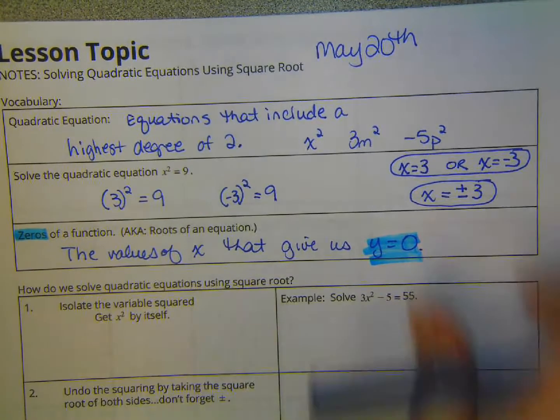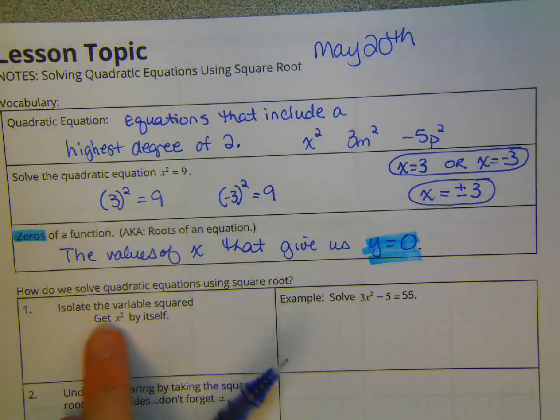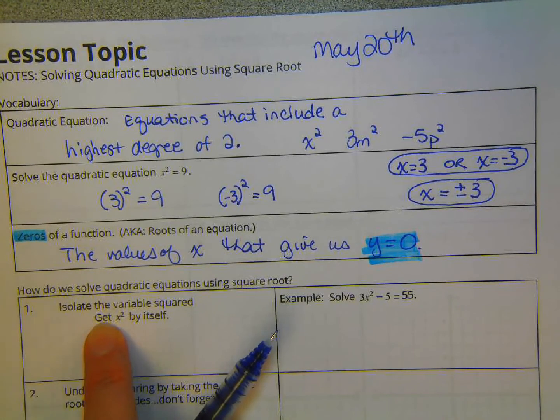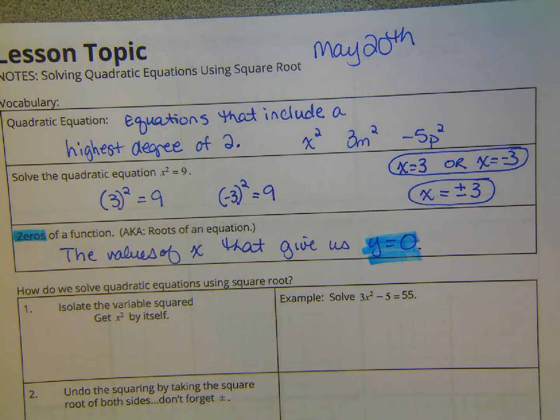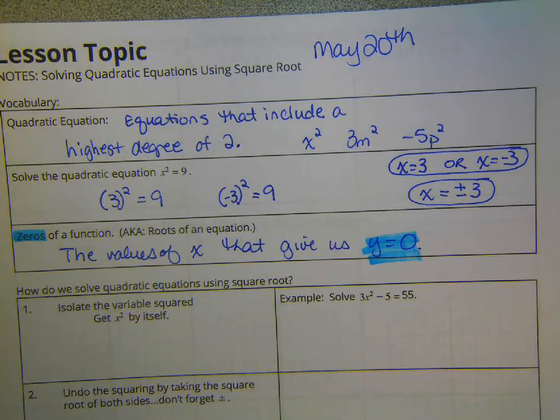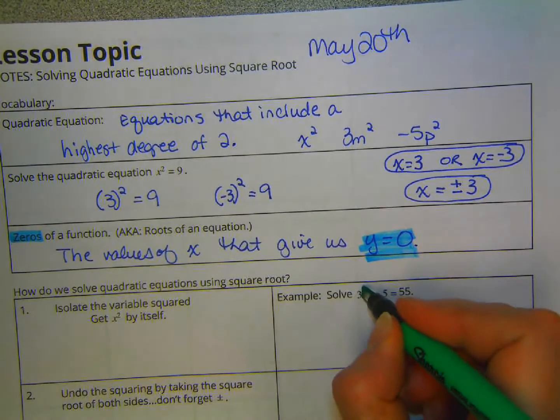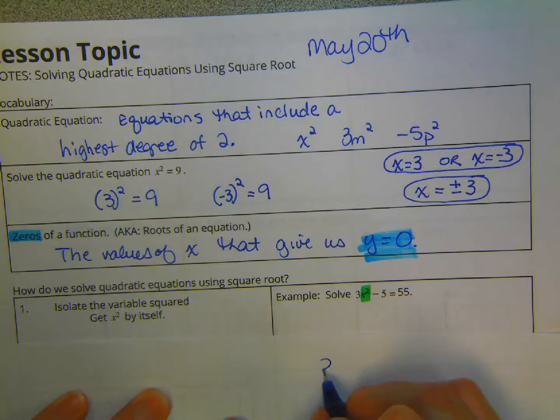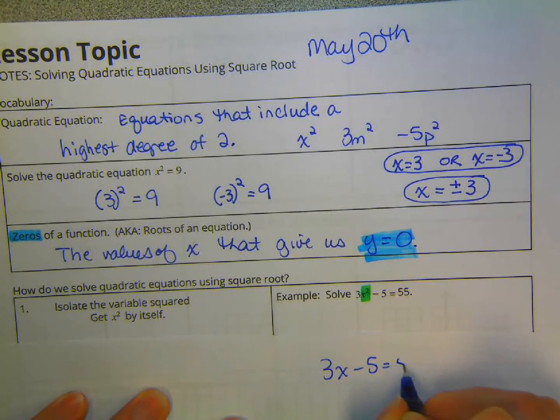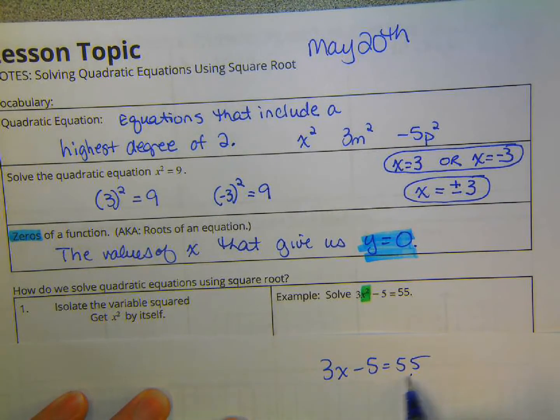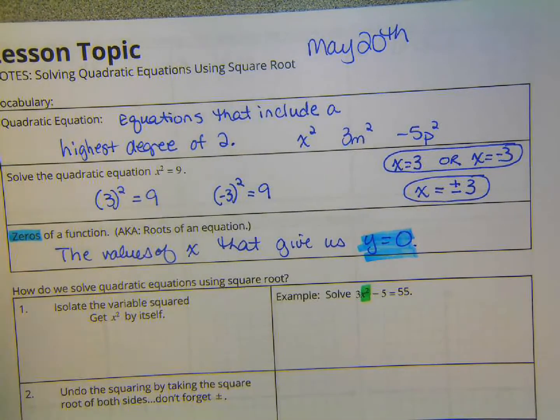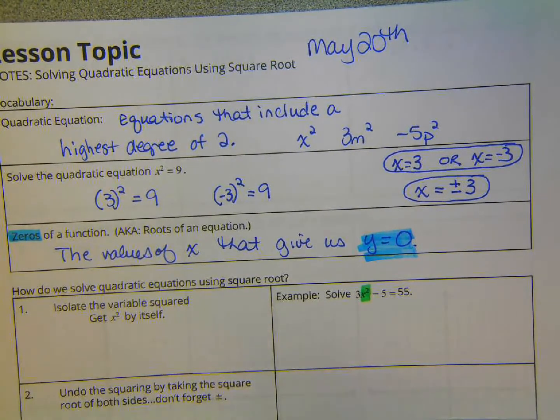So how is it that we're going to solve equations using square root? The first thing that we need to do is isolate the variable squared part. We need to isolate the x squared. So in this problem right here, I wish I had made this bigger. Hindsight is amazing. So that right there, we need to get by itself. This really is like solving 3x minus 5 equals 55. We would add 5 and then divide by 3. So that's what we're going to do here. We're going to add 5 and divide by 3.